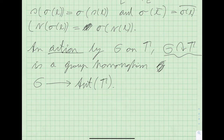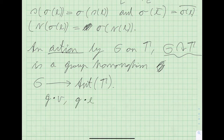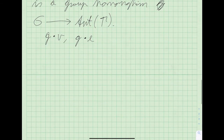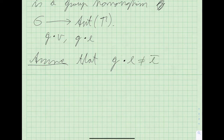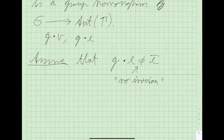We write G·v and G·e for the permutation or bijection induced by the group element G. We also assume from now on that whenever we have a group action, a group element G does not send an edge E to its inverse edge for any E. This means there are no inversions, which some people call a simplicial action. This is needed for the quotient graph to make sense.